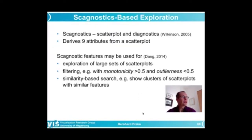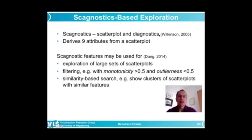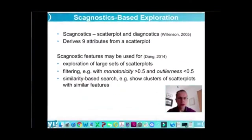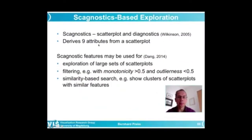One of the last things I wanted to discuss related to scatterplots is the idea of scagnostics and how scagnostics can be used for exploration. Scagnostics is a word composed of scatterplot — the first letters come from scatterplot and the last come from diagnostics. So we diagnose, that means we analyze scatterplots. We derive certain quantitative measures. In the original publication on this topic from Wilkinson, these were nine attributes. This is useful in order to search within a large amount of scatterplots.